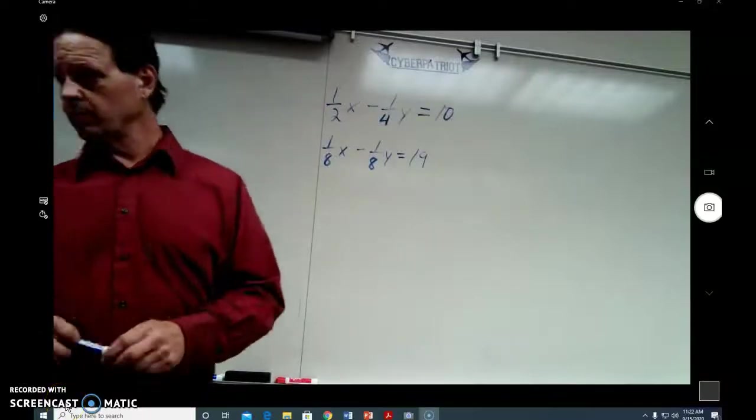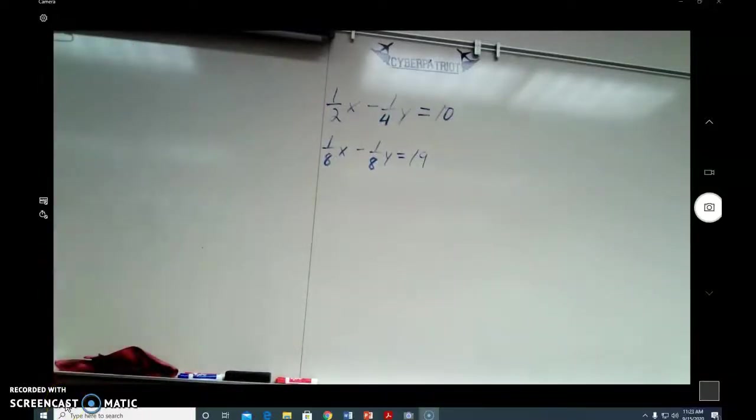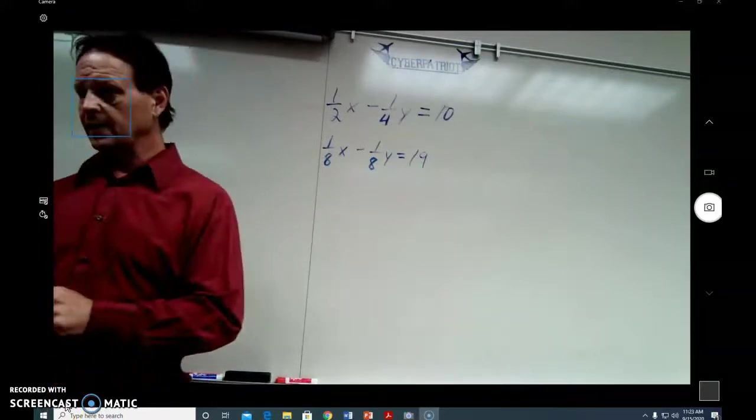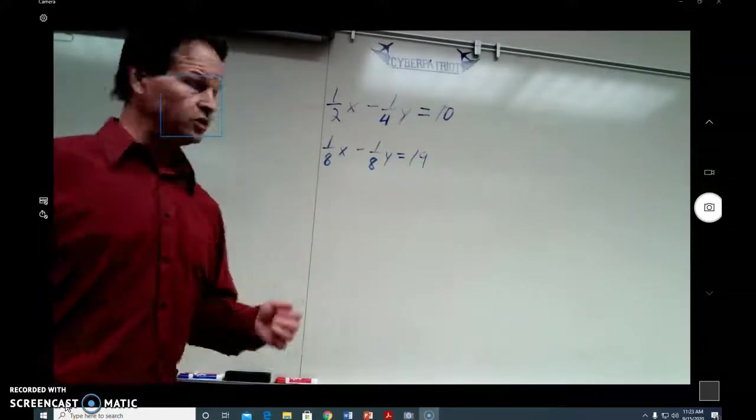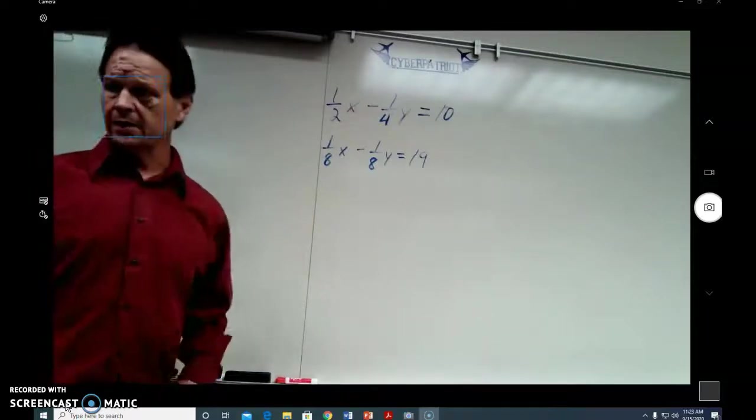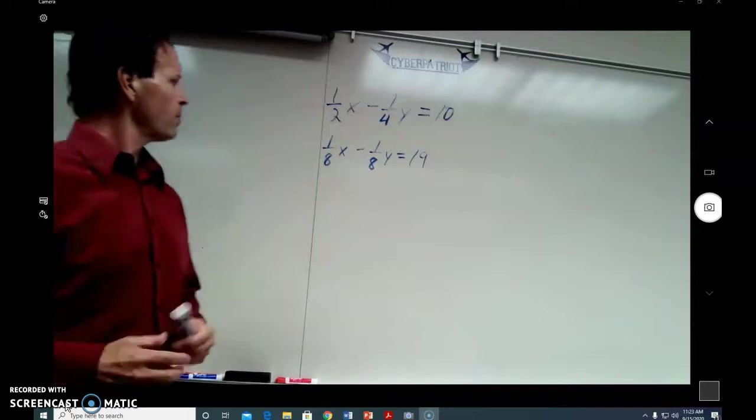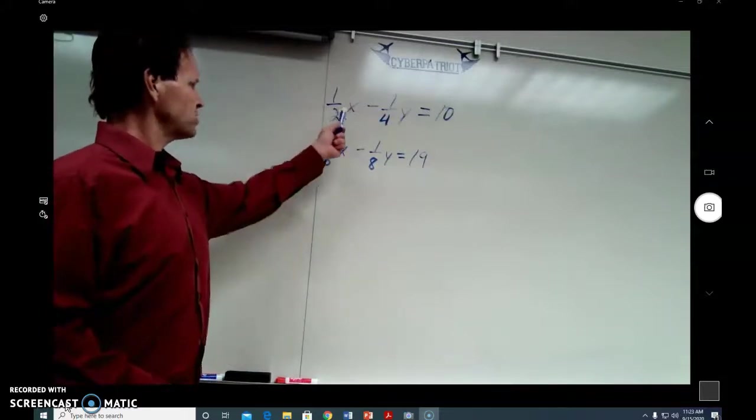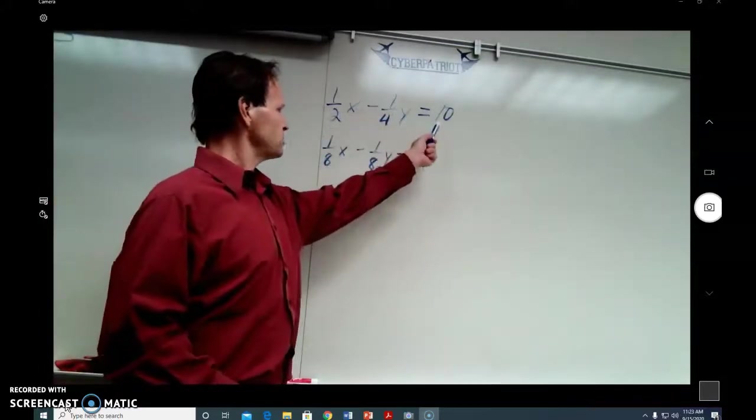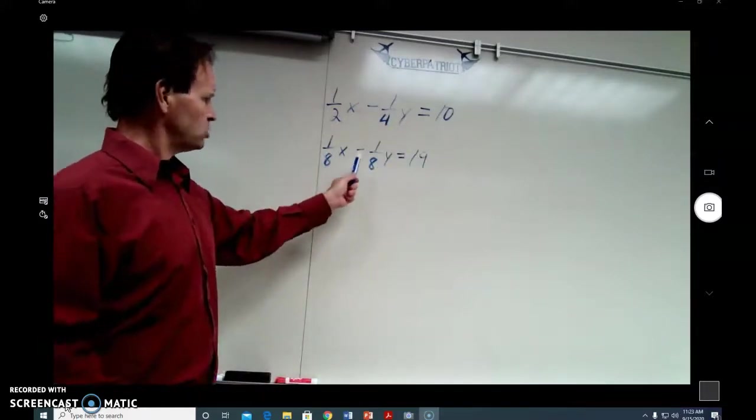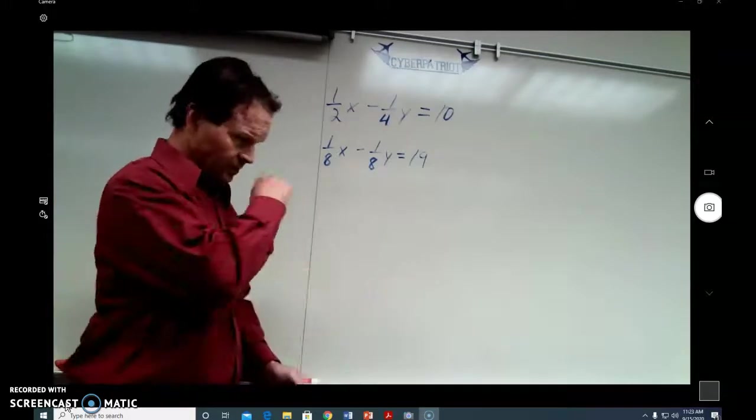Okay, so this was problem number three from the practice test one on the PSAT. This is another system of equations, and you can pause the tutorial to write it down. But it was one-half x minus one-fourth y equals 10, and the other equation is one-eighth x minus one-eighth y equals 19.